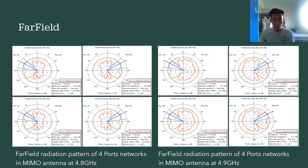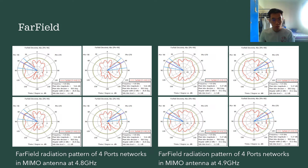The second frequency band chosen for the dual-band MIMO antenna is 4.8 GHz to 5.0 GHz. The radiation pattern, main lobe magnitude, main lobe direction, angular width, and side lobe level of these three frequency bands are totally different from the previous frequency bands of 3.3 GHz to 3.6 GHz. However, these three frequency bands possess almost the same radiation pattern and the same main lobe direction, but have different main lobe magnitude, different angular width, and different side lobe levels.